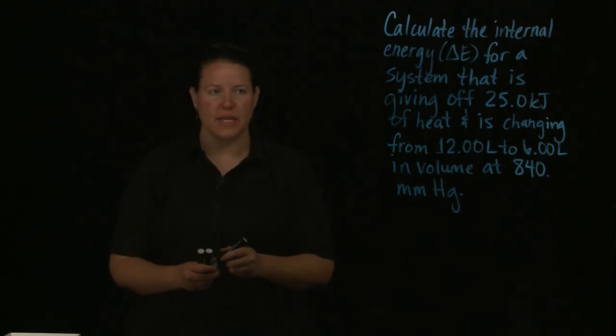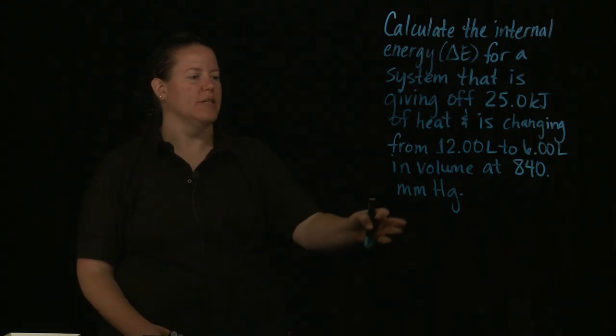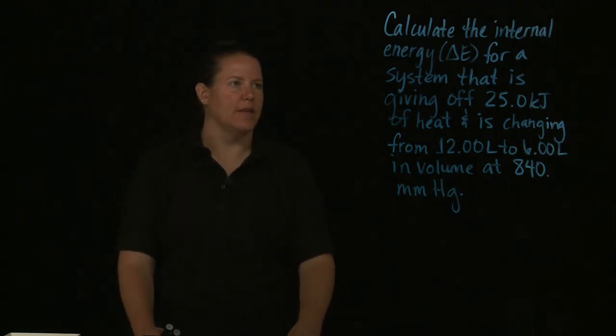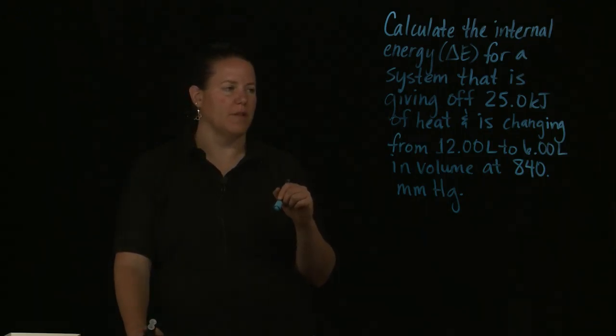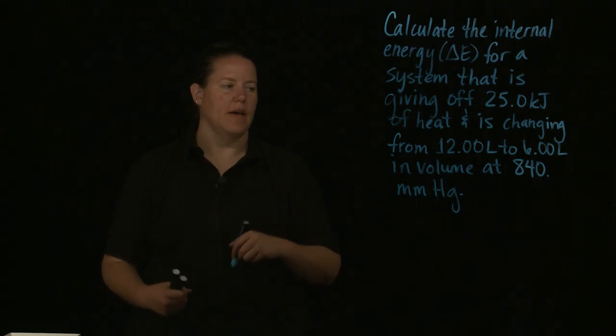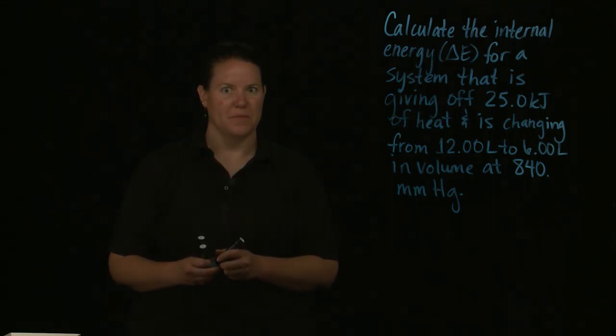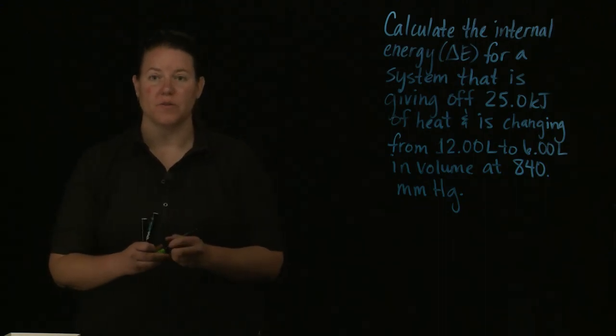All right, that being said, let's take a problem into consideration. This is the problem: Calculate the internal energy change (ΔE) for a system that is giving off 25.0 kJ of heat and is changing from 12.00 L to 6.00 L in volume at 840 mmHg.